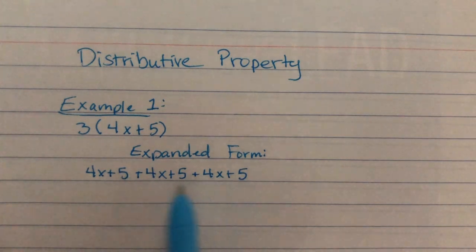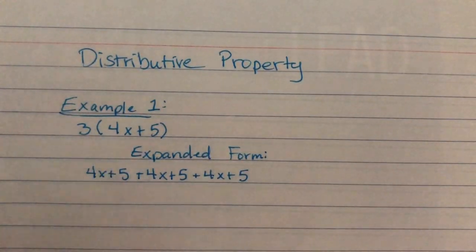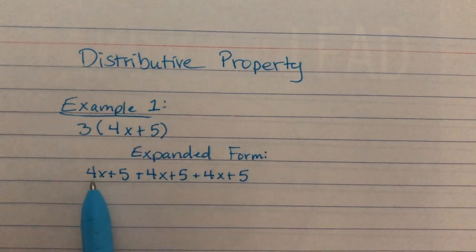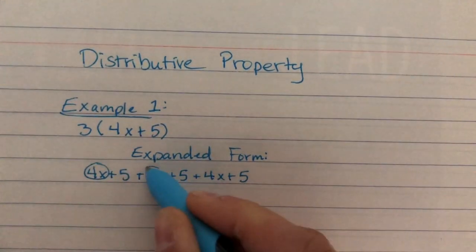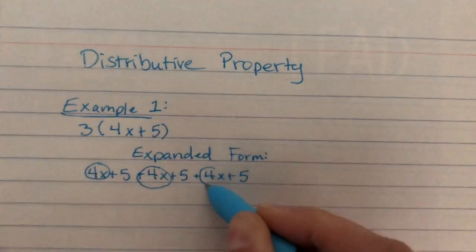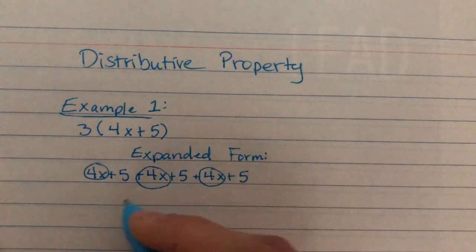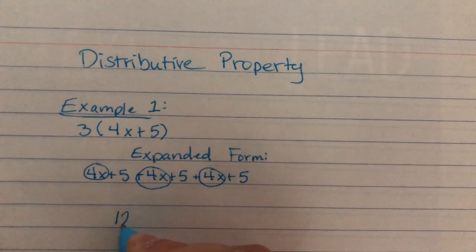Now this expression doesn't look much simpler than this one up here, but we already know how to combine like terms, and I see there are multiple places with x's and multiple constants here. So, we can go ahead and combine our like terms. There's a 4x, a 4x, and a 4x, all together that makes 12x.